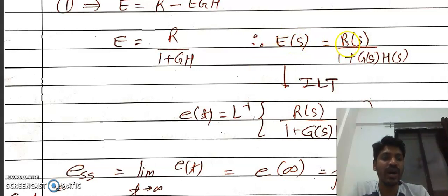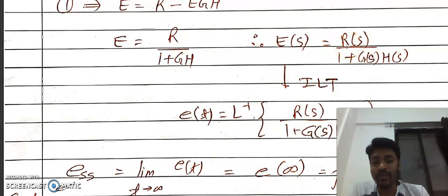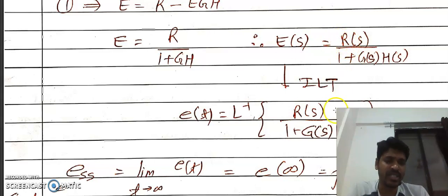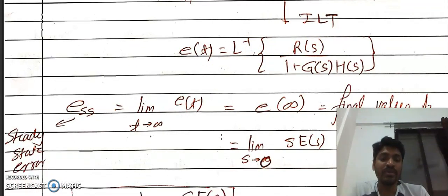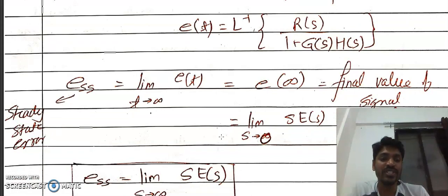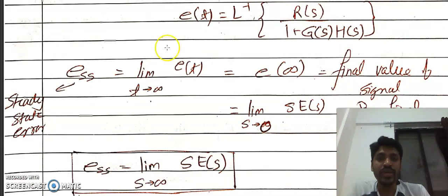The error signal is E = R − CH. With E as input to G, the output C = E·G. Substituting, E = R − EGH, which gives E(1 + GH) = R, so E = R / (1 + GH). In the S domain, E(S) = R(S) / (1 + G(S)·H(S)). To find the error signal in the time domain, take the inverse Laplace transform of R(S) / (1 + G(S)·H(S)).